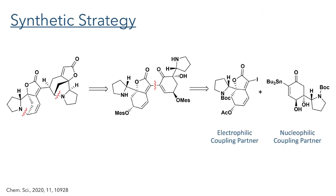Let's look at the synthetic strategy. The authors envisioned that the tetracyclic tertiary amines could be installed late in the synthesis, after the east and west fragments had been coupled together using a Stille reaction. This Stille reaction would connect two key intermediates, the electrophilic and the nucleophilic coupling partners, which would be constructed separately with complete control of the stereochemistry.